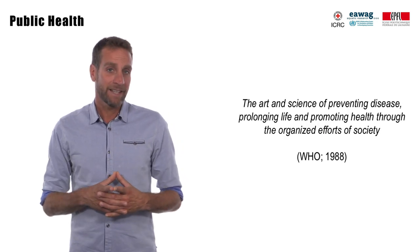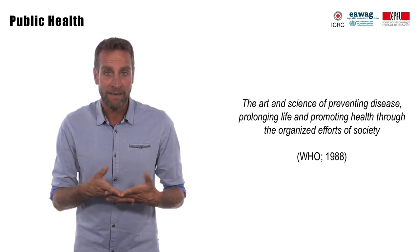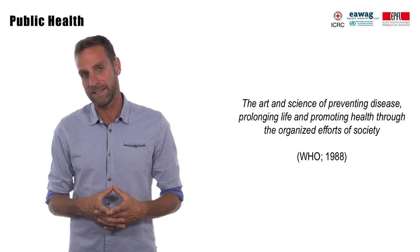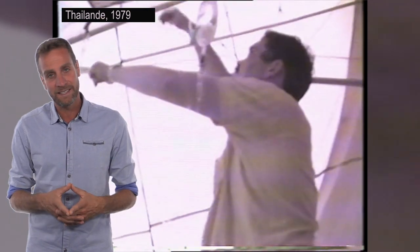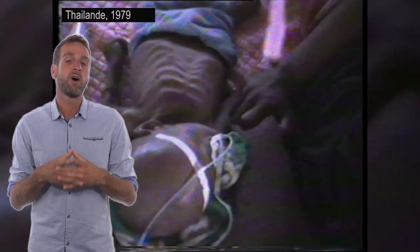Public health is defined as the art and science of preventing disease, prolonging life and promoting health through the organized effort of society. Let's go back to 1979 at the Thai-Cambodian border, where more than 1 million refugees had gathered in refugee camps. At that time, humanitarian assistance was mainly devoted to surgical and curative care, while activities dealing with water supply, sanitation or nutrition were perceived as secondary. Facing a high rate of mortality and morbidity in these refugee camps due to diarrhea and vector-borne diseases, an ICRC doctor named Pierre Perrin came up with what we called the pyramid of health model.